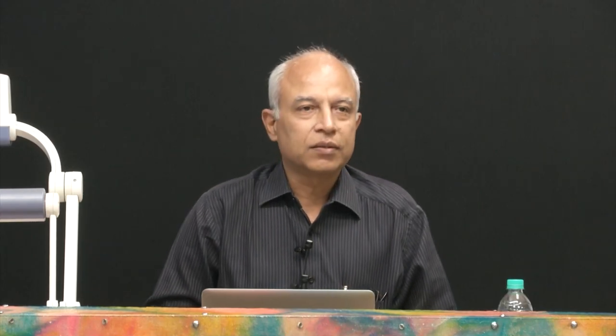Clickers, in my opinion, are the most proven method that came out of educational technology research. What is a clicker? This is what is used by Amitabh Bachchan in the earliest avatar of Kaun Banega Crorepati — all participants used to click their answers A, B, C, or 1, whatever. This device helps us find out whether the students have understood whatever we are teaching. That is extremely important, because there were times at the mid-semester exam when I found out that students had not understood the meaning of root locus, and I had gone on to teach how to design controllers using root locus.